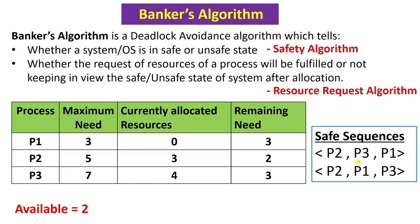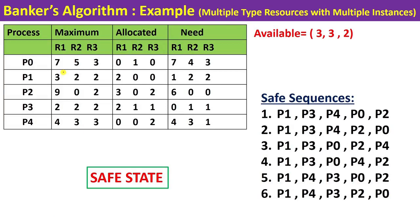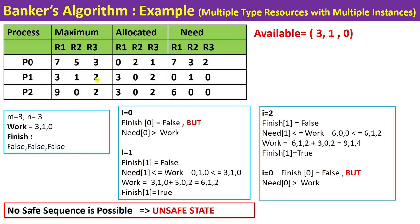In one example we found two safe sequences, meaning the current representation of the operating system is in a safe state. If we find even one safe sequence, we say the system is in a safe state. We also discussed an example with multiple resource types like printer, CD-ROM, and tape drive, finding safe sequences confirming a safe state. In another example, no safe sequence was possible, meaning the representation corresponds to an unsafe state.